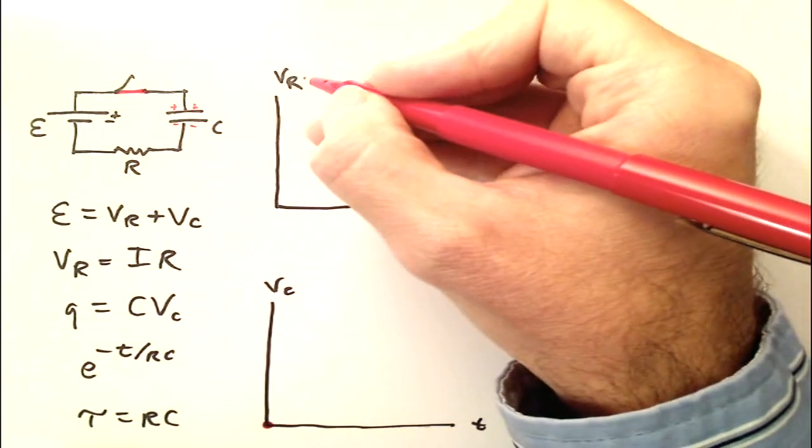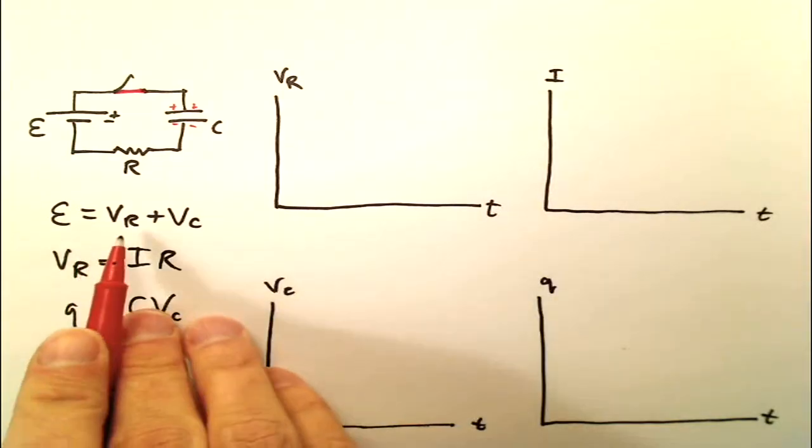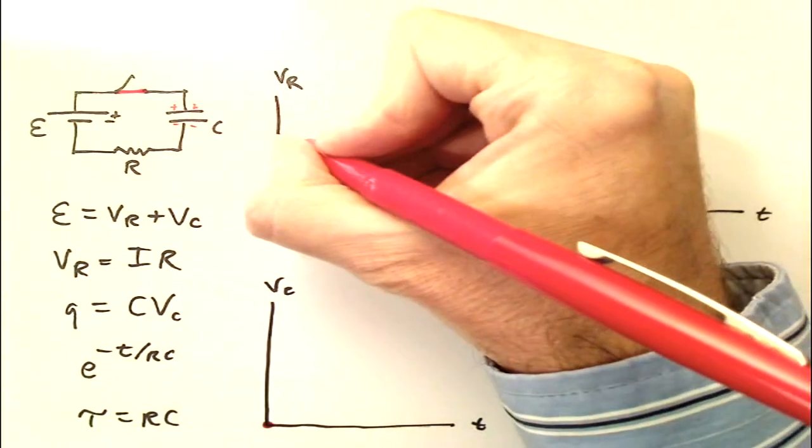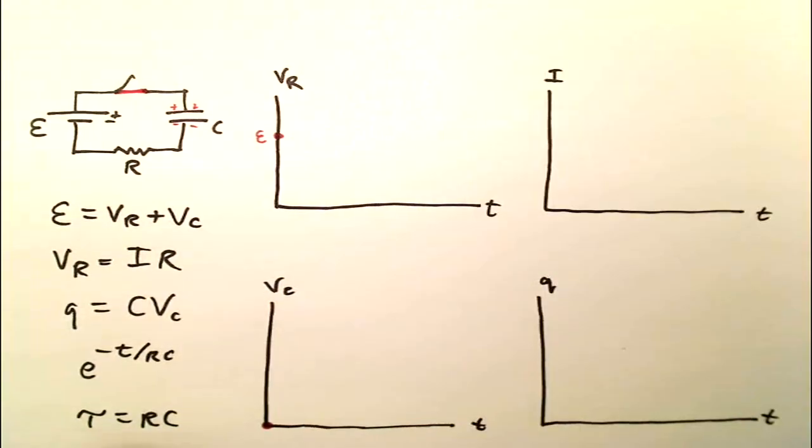Now the voltage on the resistor is not going to be zero because the sum of VR and VC must always be E. If this is zero down here, then this must be E right there when t equals zero.